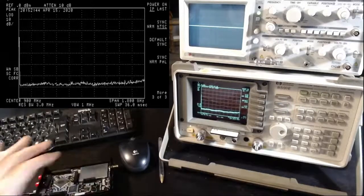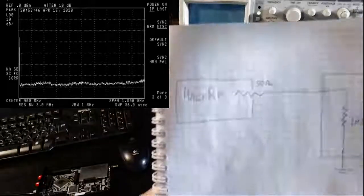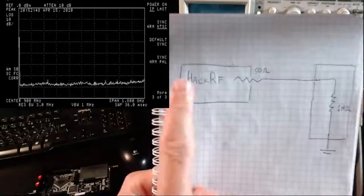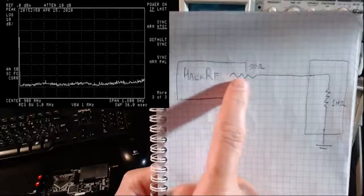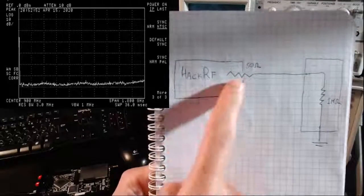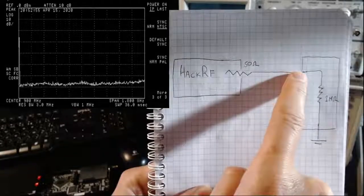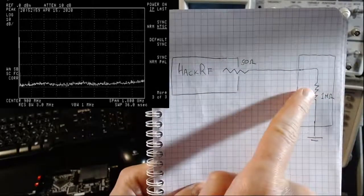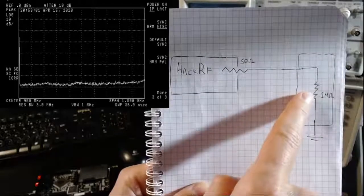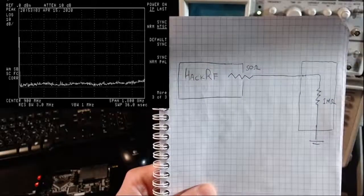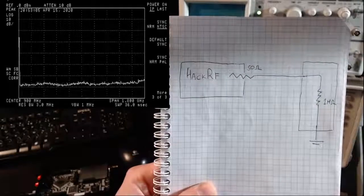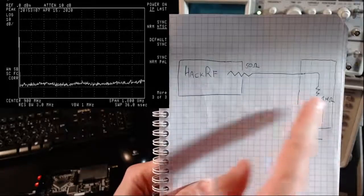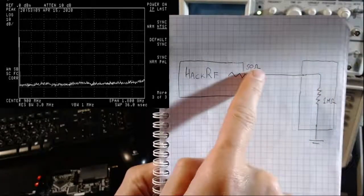Really, the situation that we have is the following: the HackRF is this device, it has an internal resistance of 50 ohms. If we connect it to the oscilloscope, which is this device here, the oscilloscope has an internal resistance of 1 megaohm. The problem with that is that this will cause reflections.